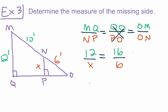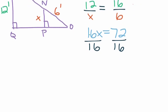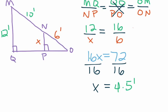So that tells us, going back to our diagram, the length of segment NP is going to be 4.5 feet long. This can be a bit of a confusing topic in math, so let's take a look at one more example.